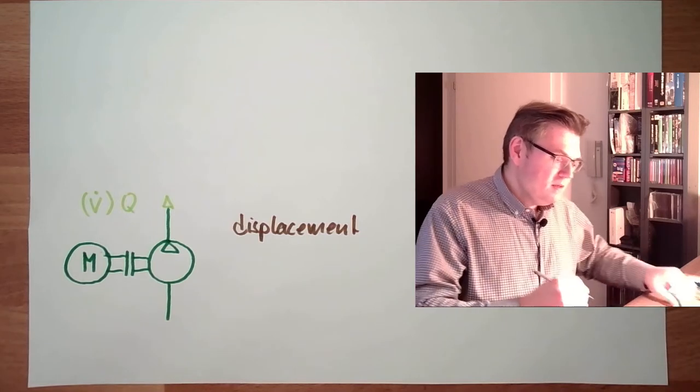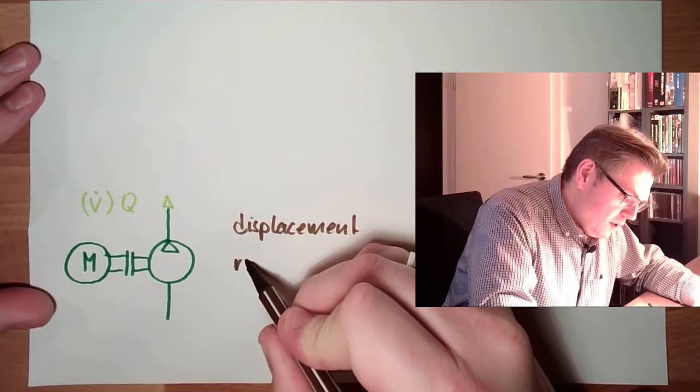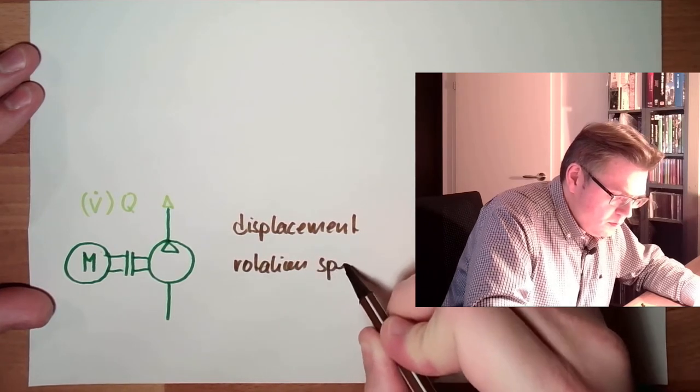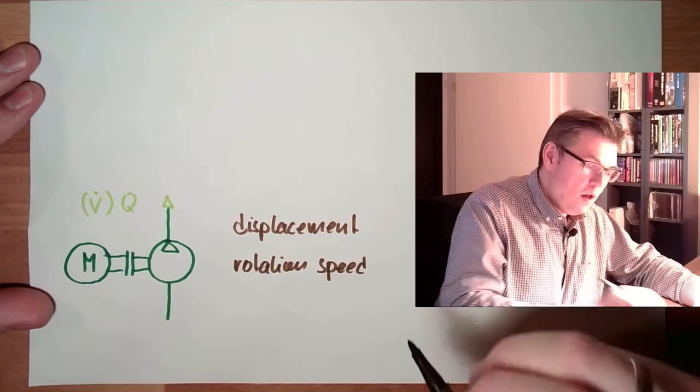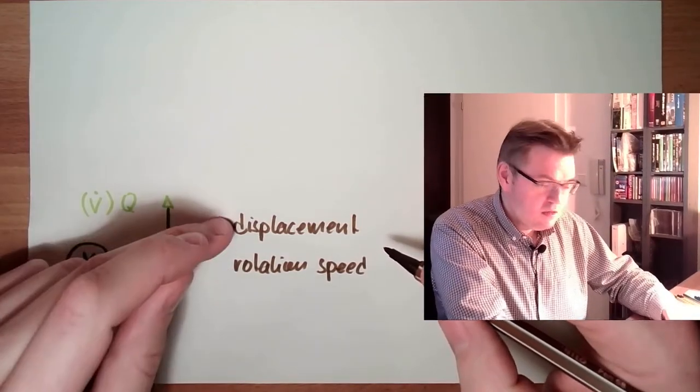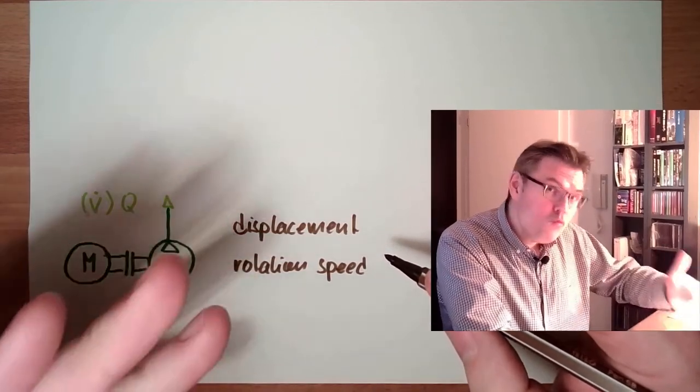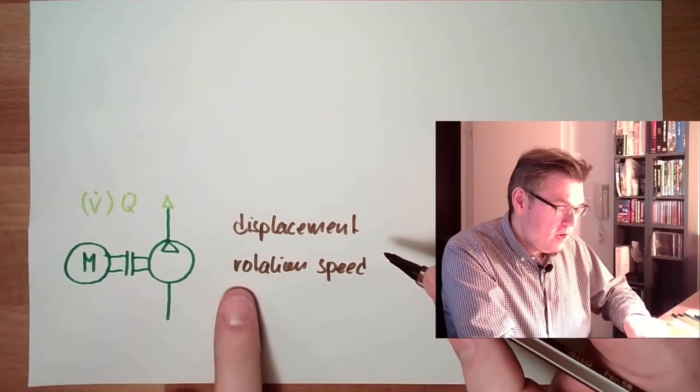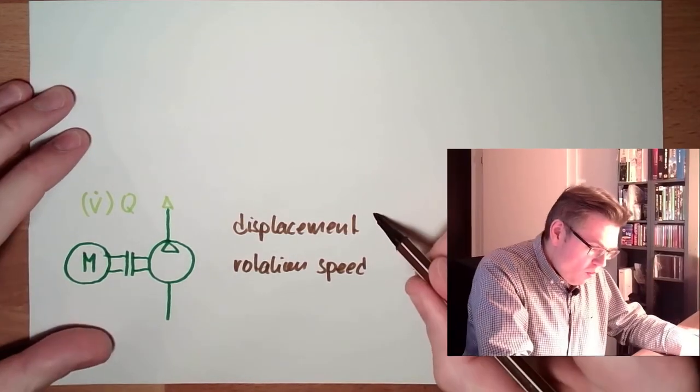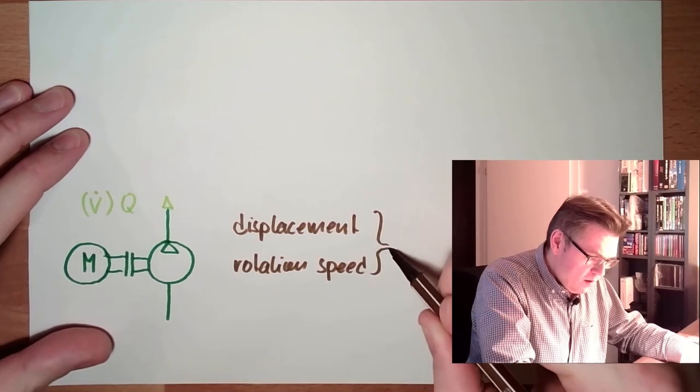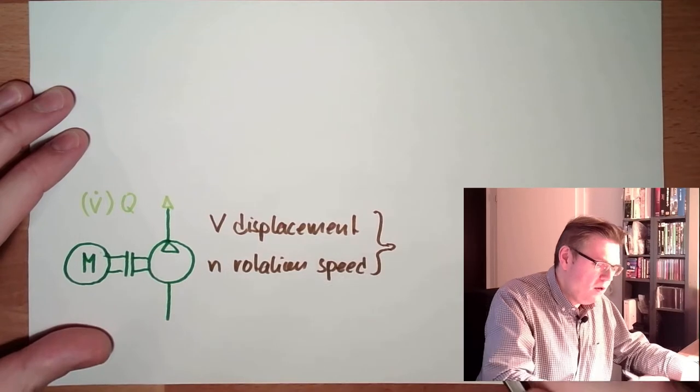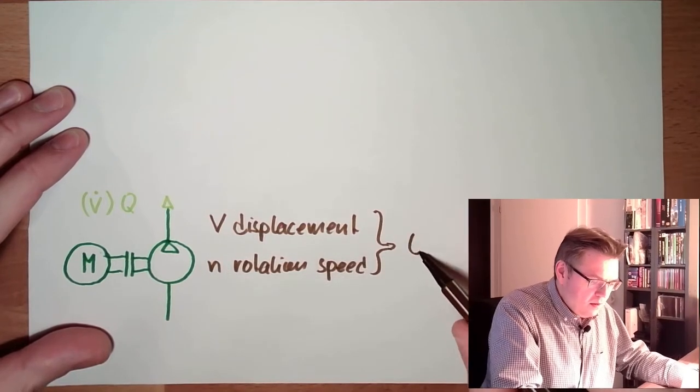Then there is the speed, rotation speed. From the displacement and the rotation speed, because the displacement is what I get out or what I get through with one rotation, and here rotation speed, revisions per minute or whatever, those two combine. This is usually marked as V. This is usually marked with N. Those two combine, deliver this Q.